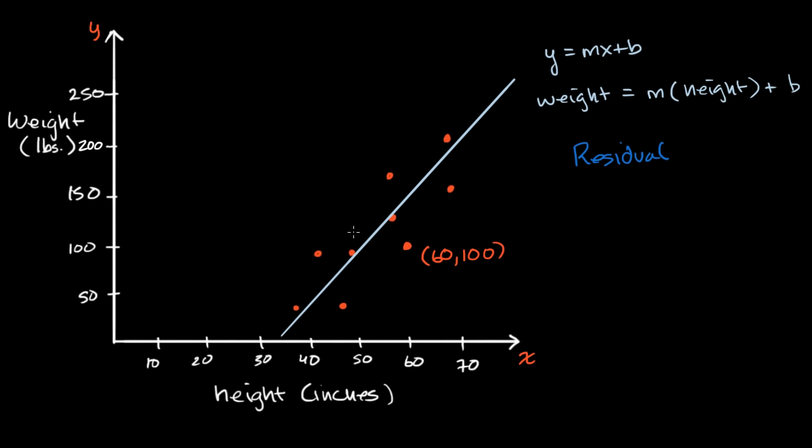And so, for example, if I call this right here, if I call that point one, the residual for point one is going to be, well, for our height variable, 60 inches, the actual here is 100 pounds. And from that, we would subtract what would be predicted. And so what would be predicted is right over here. I could just substitute 60 into this equation, so it would be m times 60 plus b. So I could write it as 60m plus b. Once again, I would just take the 60 pounds and put it into my model here and say, well, what weight would that have predicted?